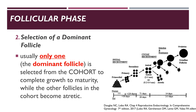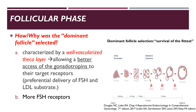The second stage in the follicular phase is the selection of a dominant follicle. Usually, only one follicle is selected from the cohort — that is the dominant follicle that will complete growth to maturity — while the other follicles become atretic. This is why we call it the survival of the fittest. The dominant follicle is selected mainly because of its competitive advantage: it has a well-vascularized thicker layer allowing better access of gonadotropins to their receptors, and it also has more FSH receptors, resulting in preferential delivery of FSH to the dominant follicle.